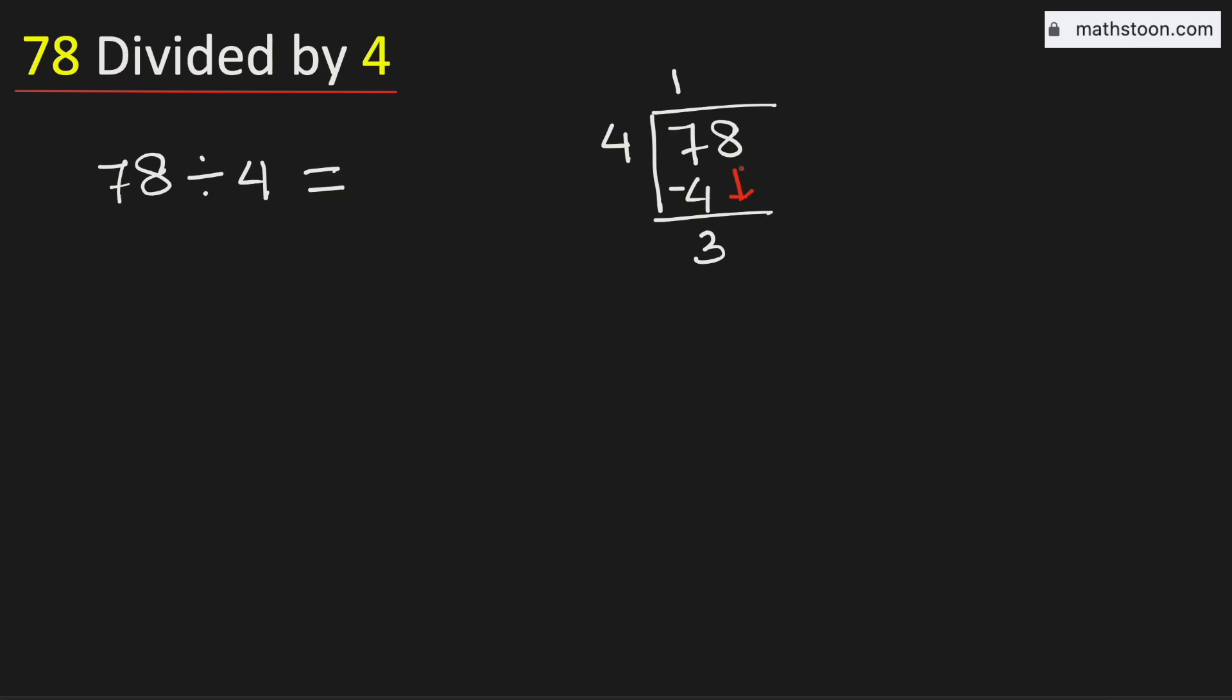That is why we will bring down this number 8 here. Now 4 times 9 is 36. Subtract, we get 2.